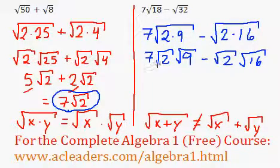So here, I have 7 times root 2 times root 9. Root 9 is just 3. 3 times 7 is 21. So I get 21 root 2.